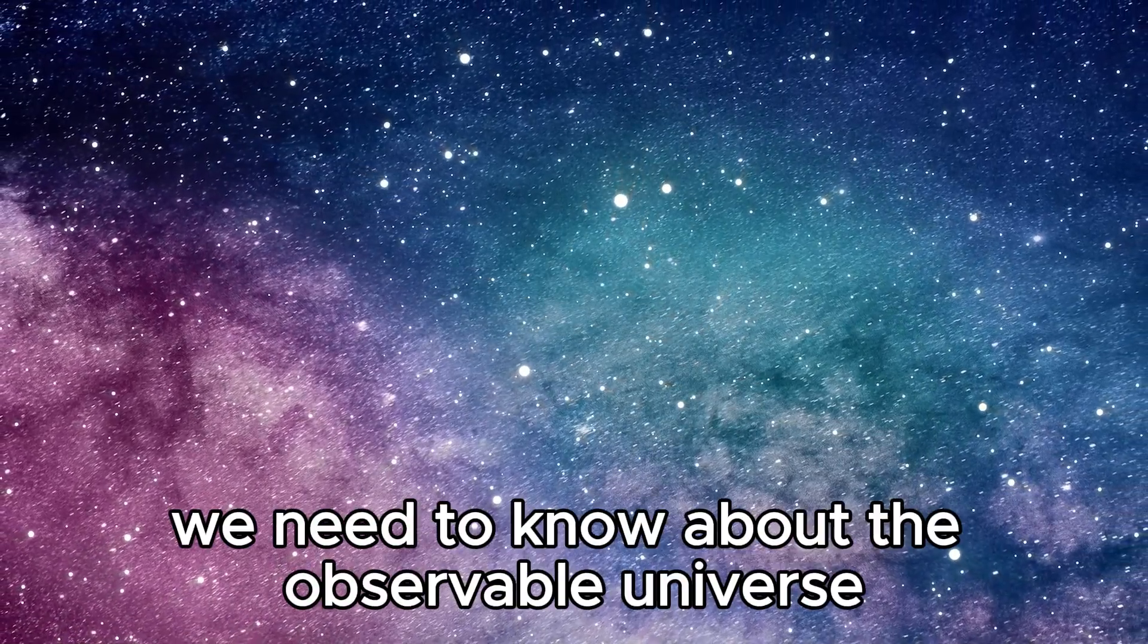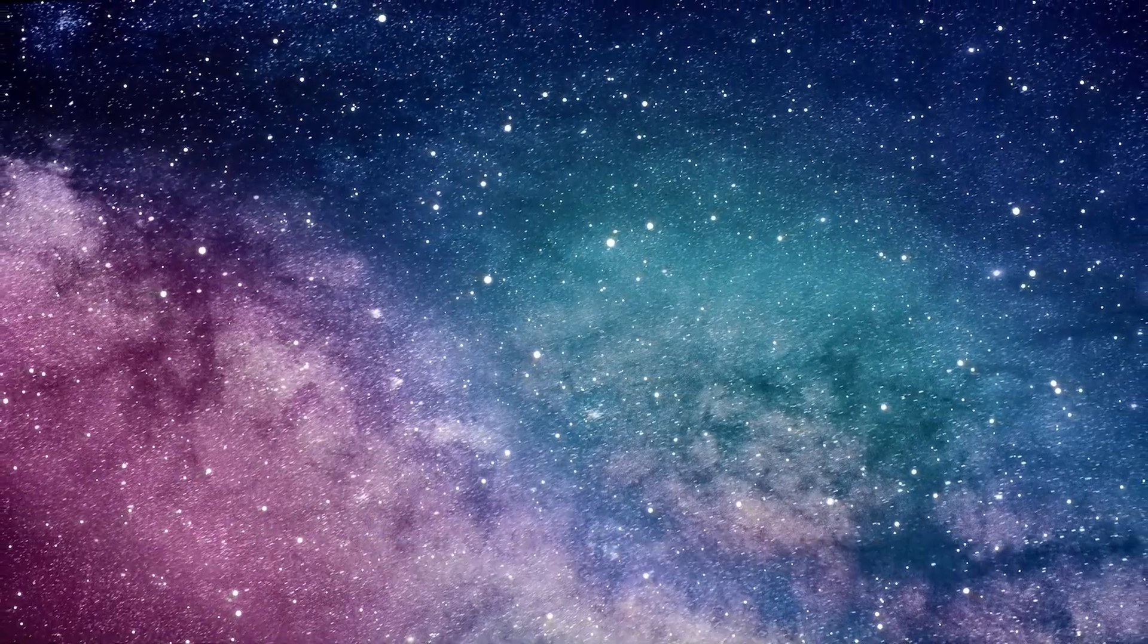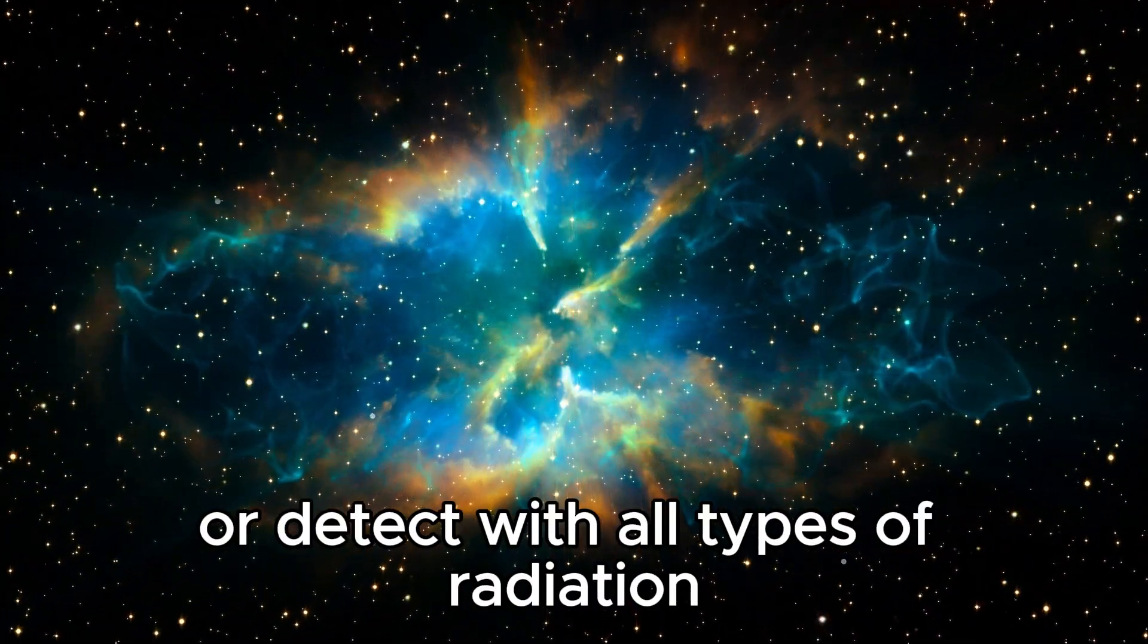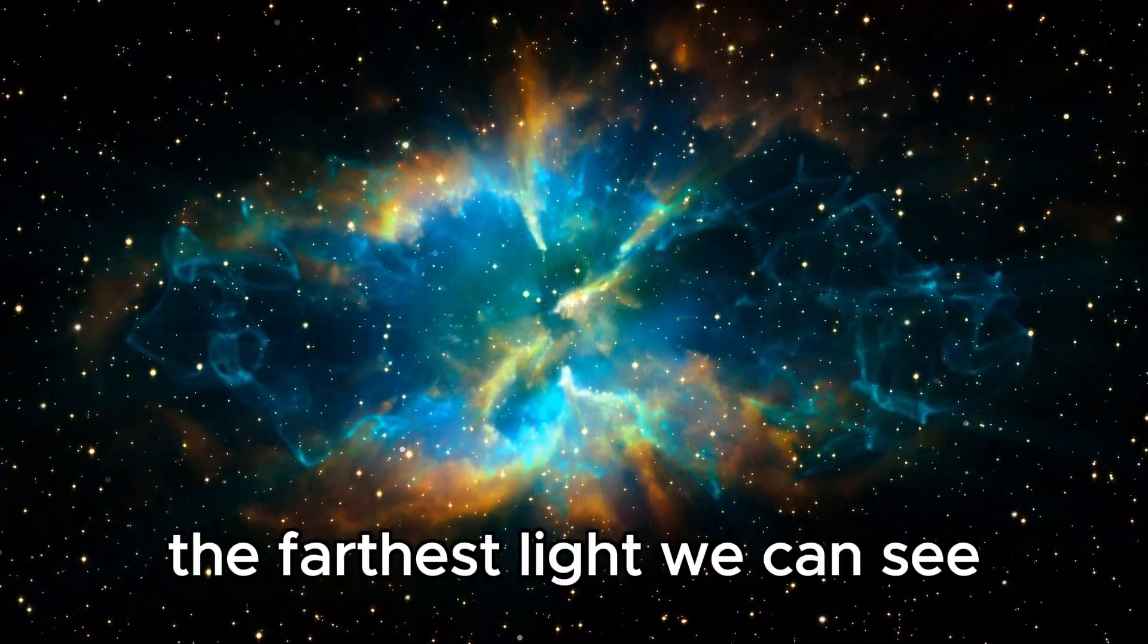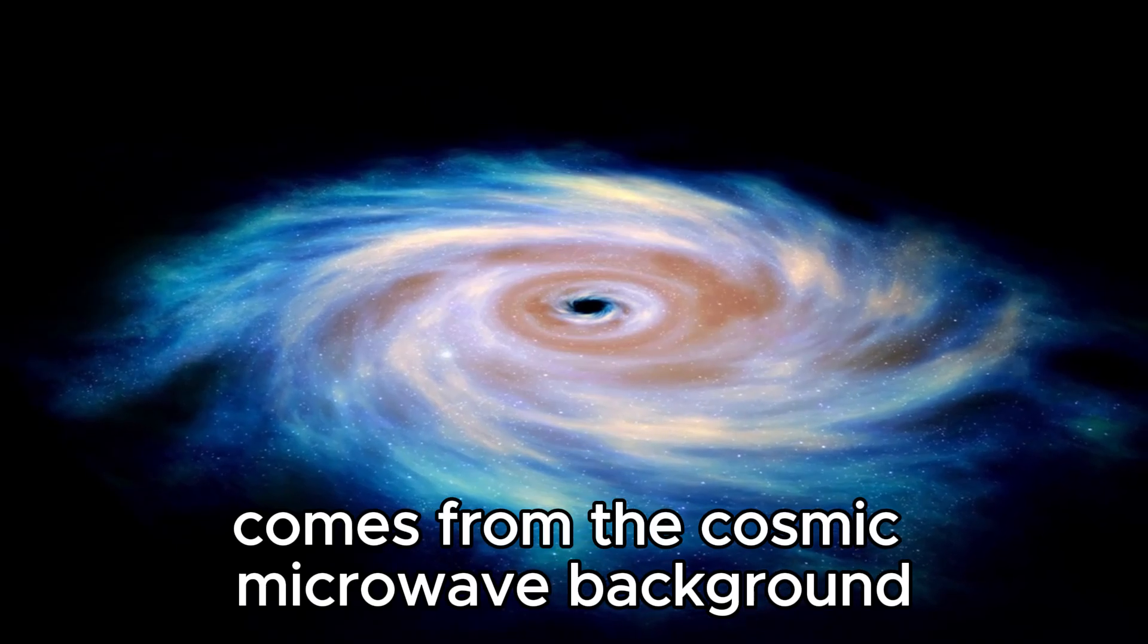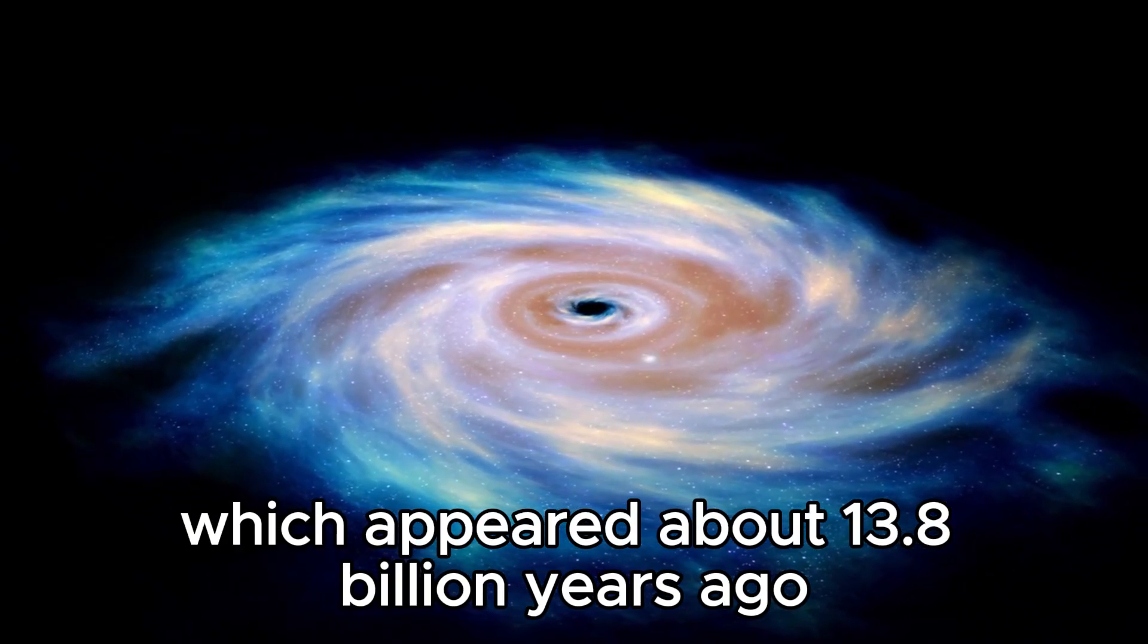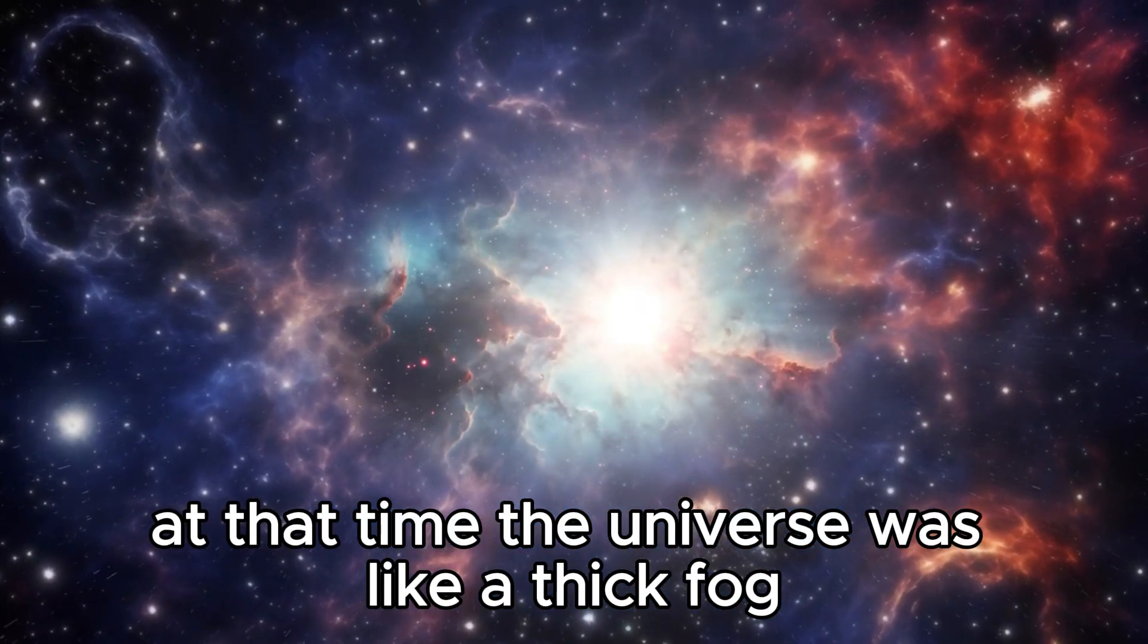To understand this, we need to know about the observable universe and the unobservable universe. The observable universe includes everything we can see or detect with all types of radiation, but there's a limit to what we can observe. The farthest light we can see comes from the cosmic microwave background, which appeared about 13.8 billion years ago. At that time, the universe was like a thick fog, making it opaque.